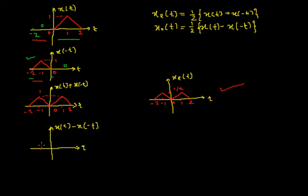Drawing the time divisions: 0, 1, and 2. For the range minus 2 to 0, it is the reflected version of the triangular signal with an amplitude of minus 1. For the range 0 to 2, X(t) is the triangular wave and X(-t) is 0, so 1 minus 0 means the shape of X(t) is retained with an amplitude of 1.